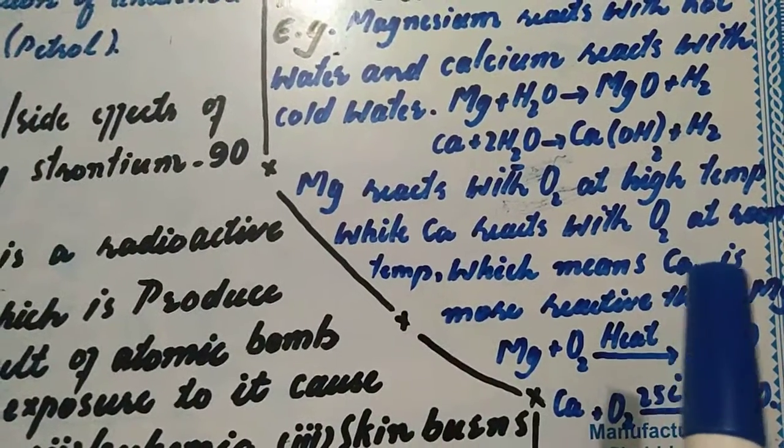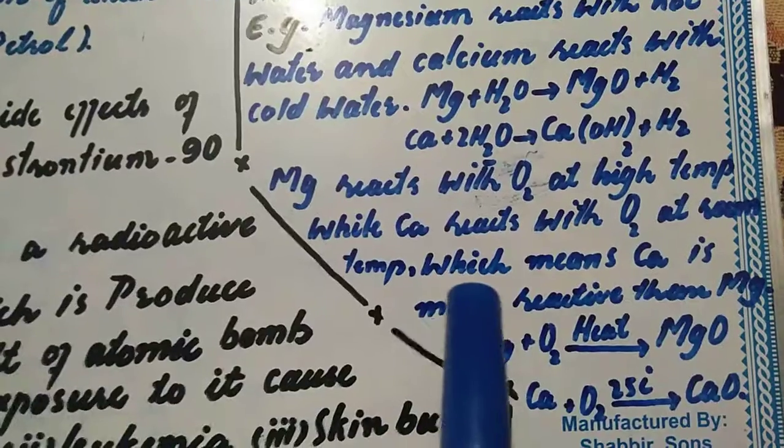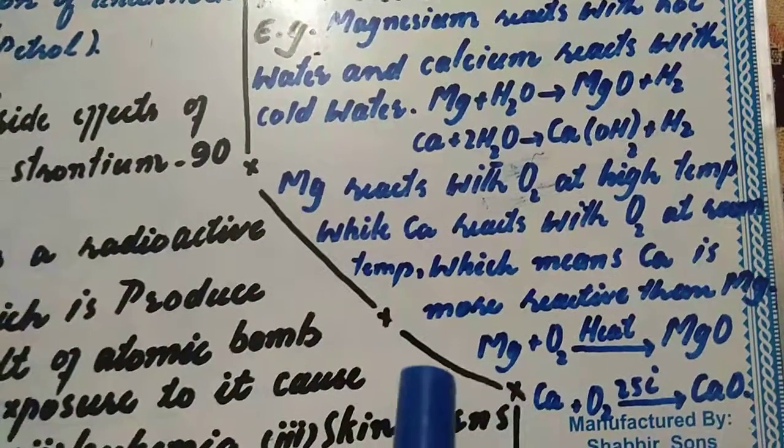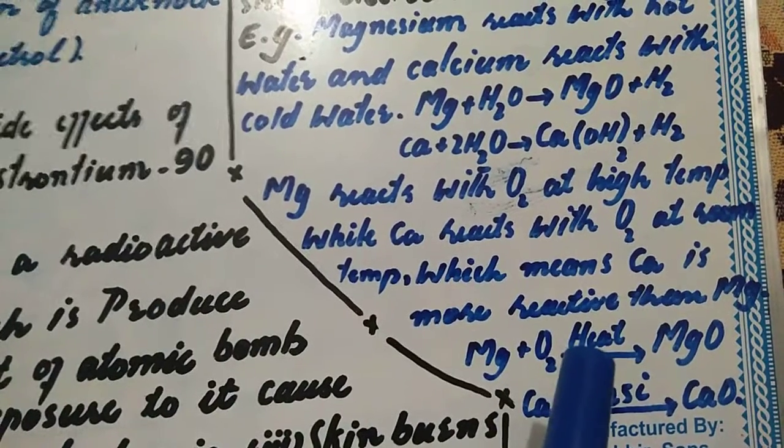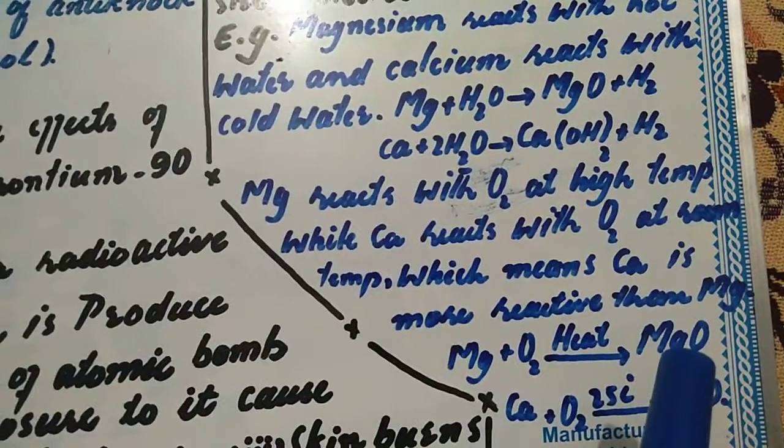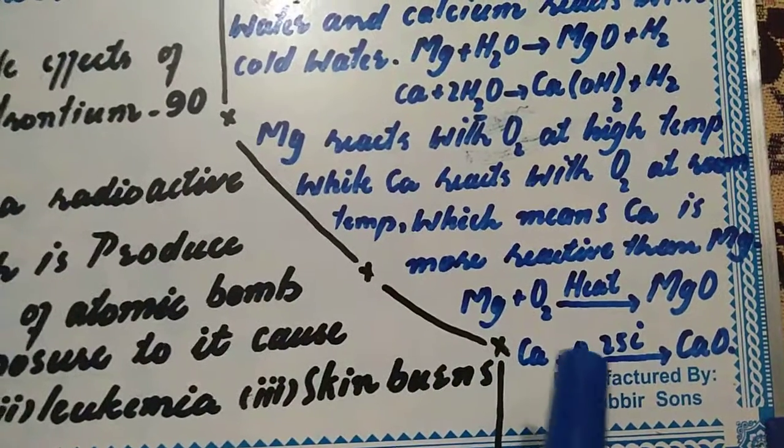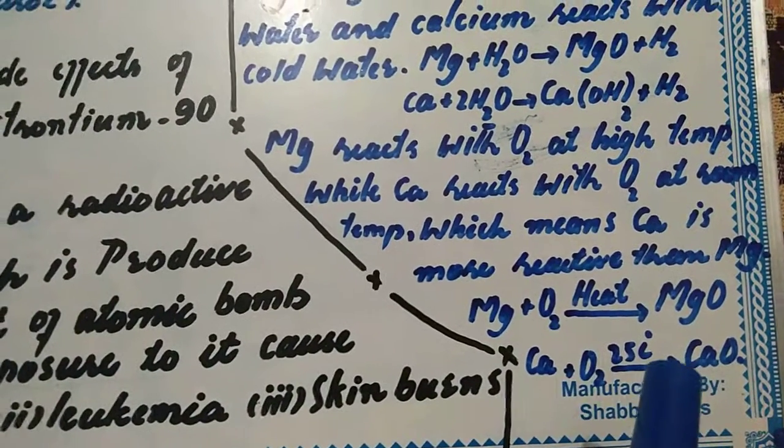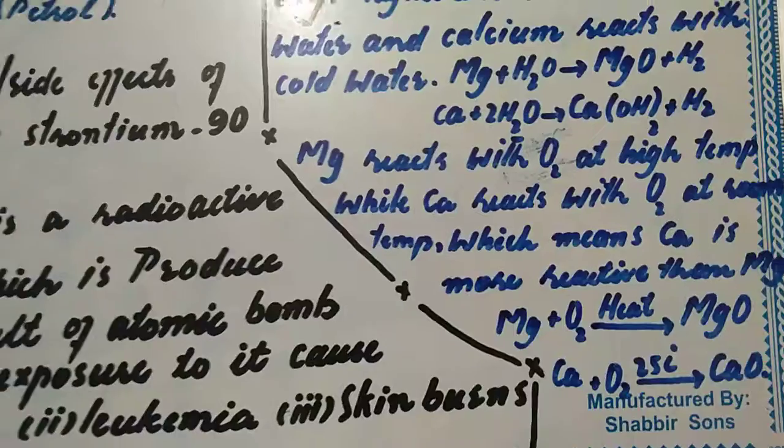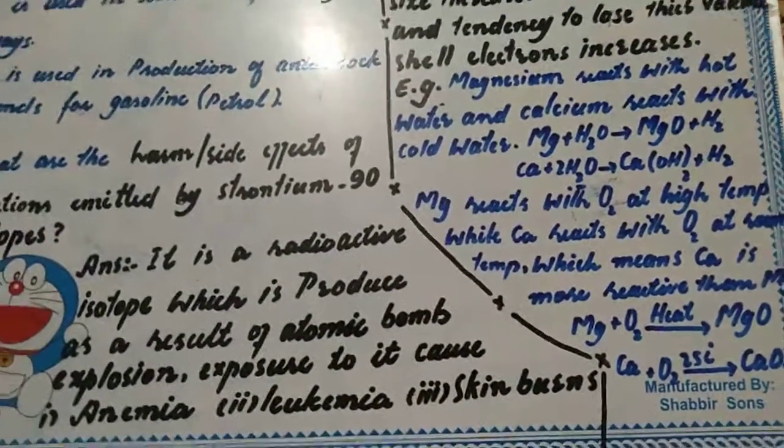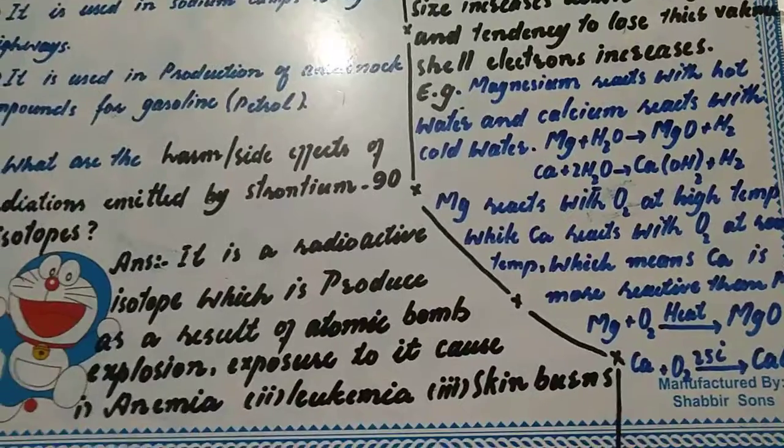Magnesium reacts with oxygen at high temperature while calcium reacts with oxygen at room temperature, which means calcium is more reactive than magnesium. Magnesium needs heat to react with oxygen to form magnesium oxide, while calcium reacts with oxygen at room temperature to form calcium oxide.